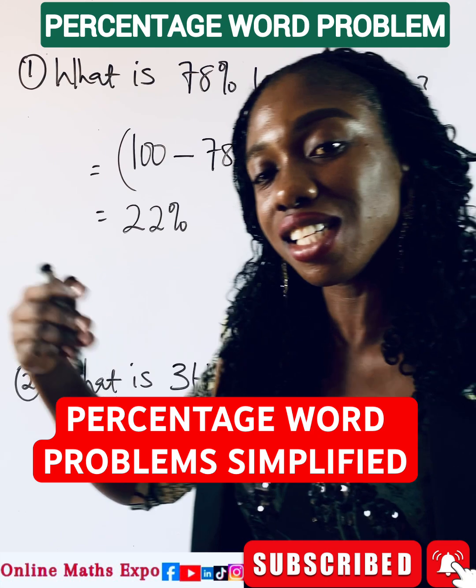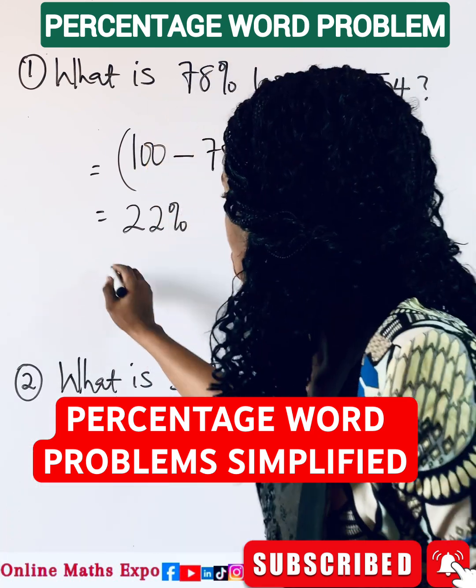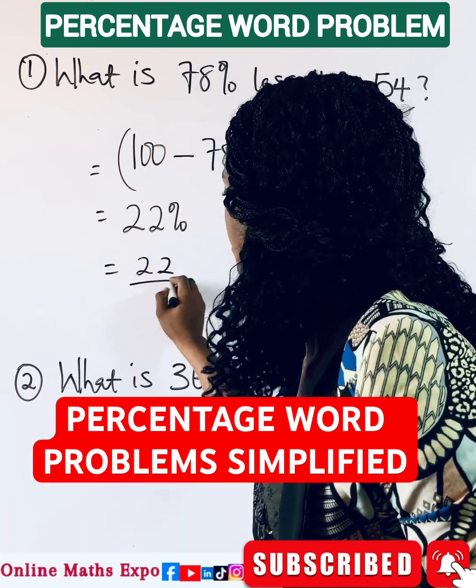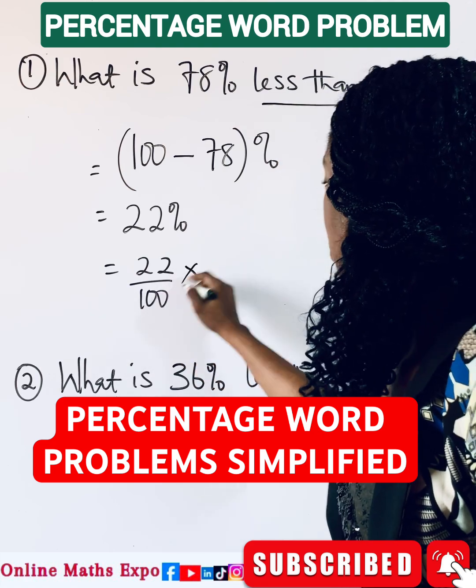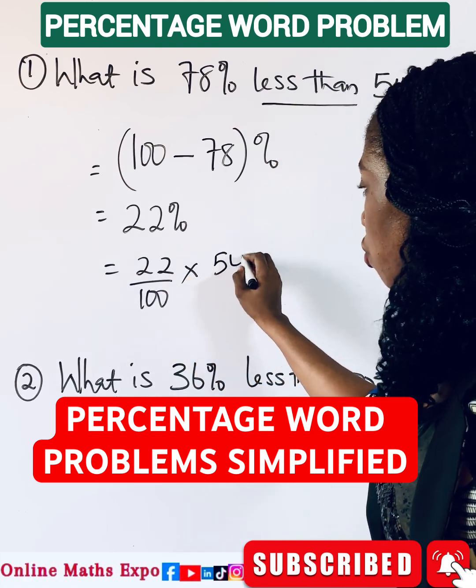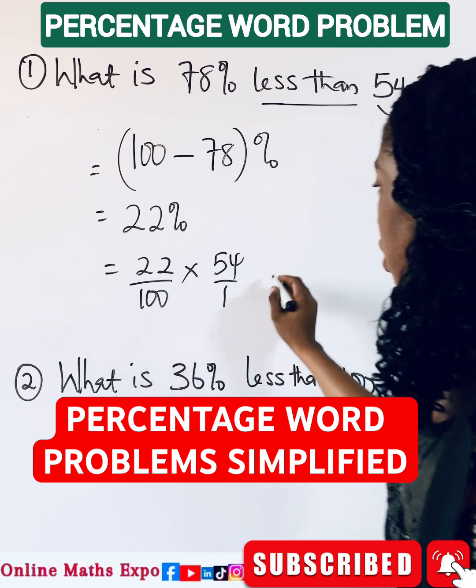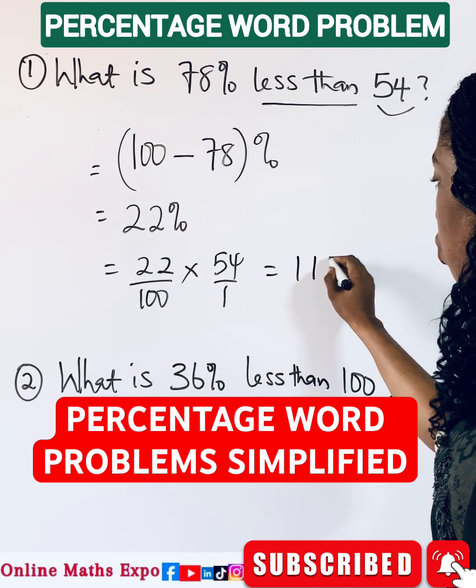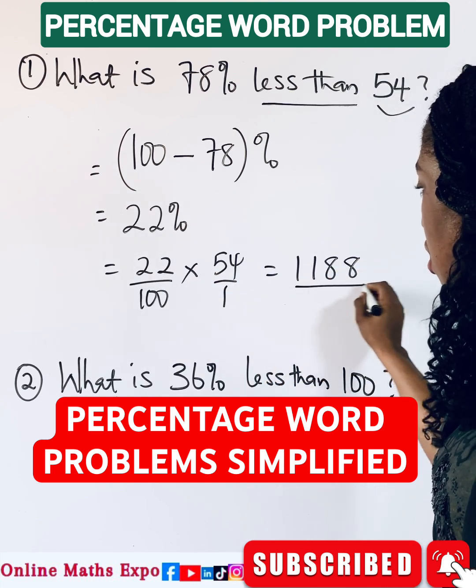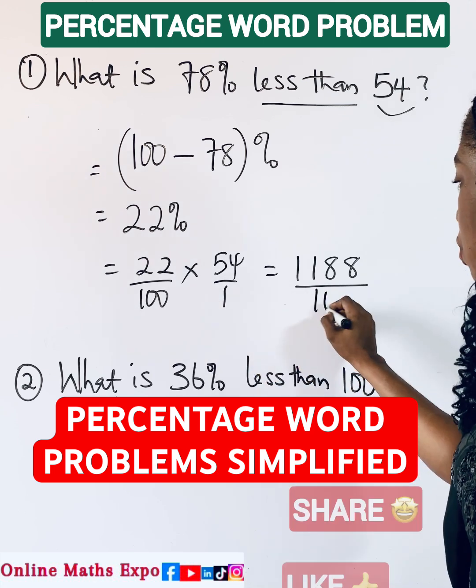22% - you know percentage is a fraction of 100 - so it's going to be 22 divided by 100, then multiply it by this 54 over 1. When you multiply this, it gives you 1188 over 100.